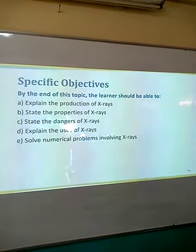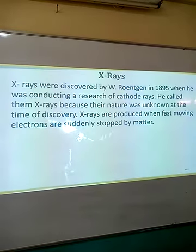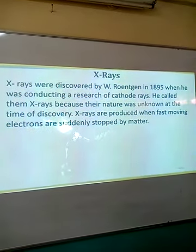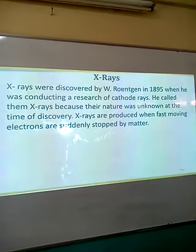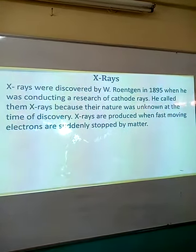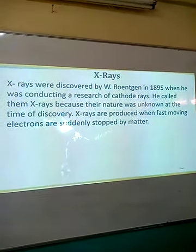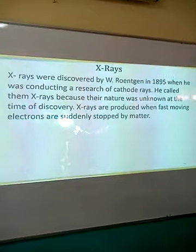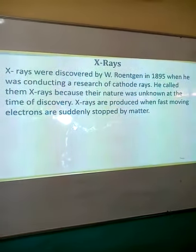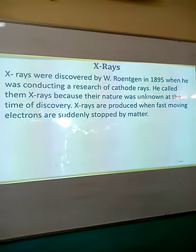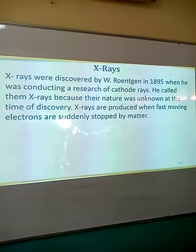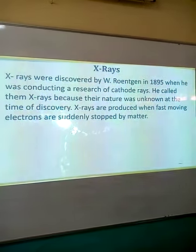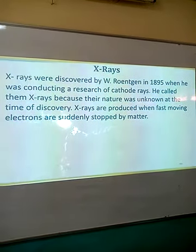We are going to look at X-rays generally. X-rays were discovered by a German by the name Röntgen in 1895. He was in the process of conducting some research on the cathode ray, and in the process he realized that there were additional rays of which he did not have their names at that time, and therefore he gave them the name X-rays. These rays are produced when fast-moving electrons are suddenly stopped by a barrier, also known as matter or the target.